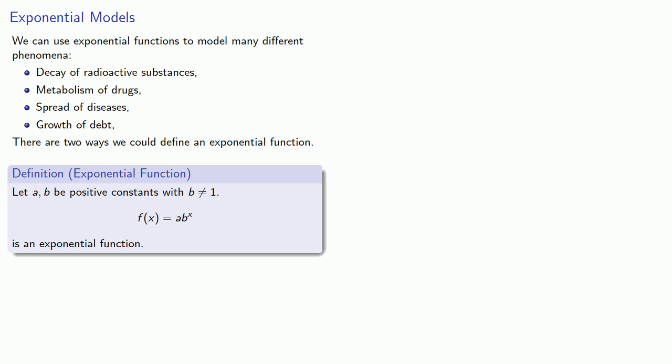But actually it's convenient to use e as our base, and so with a little bit of algebra we can transform this b^x into e^(kx). This gives us a different definition: let a and k be non-zero constants with a greater than 0, then f(x) = ae^(kx) is an exponential function.